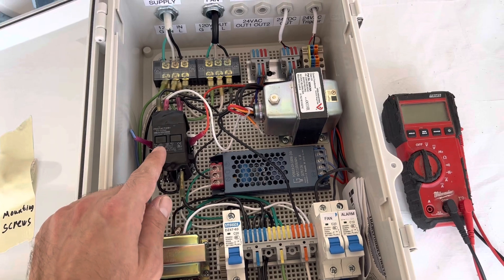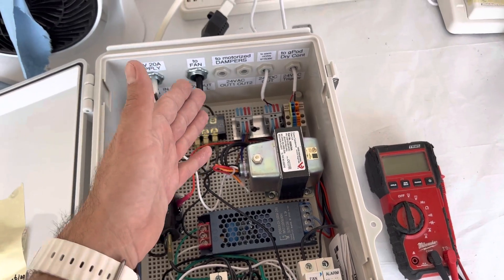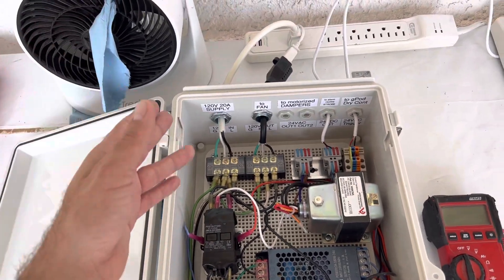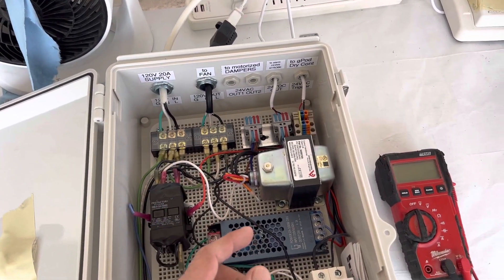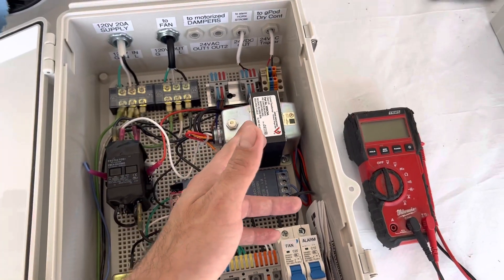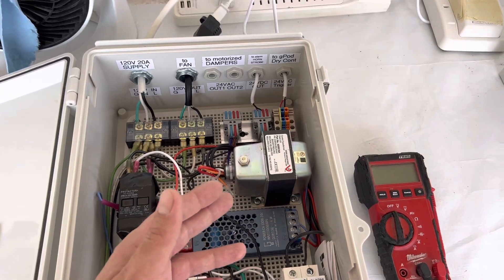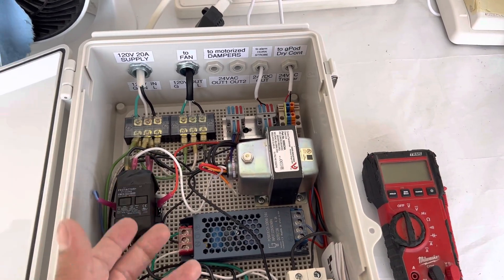It provides 120 volt to the fan, like this fan I connected here just as an example. Also, it starts feeding this transformer - it's 24 volt AC - so it can turn on something that requires AC power.